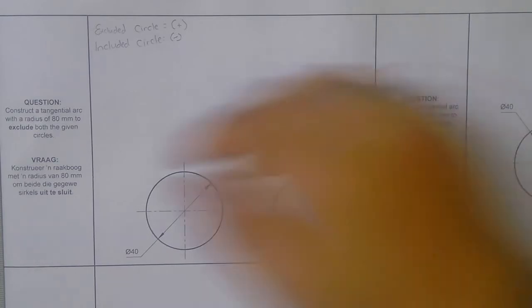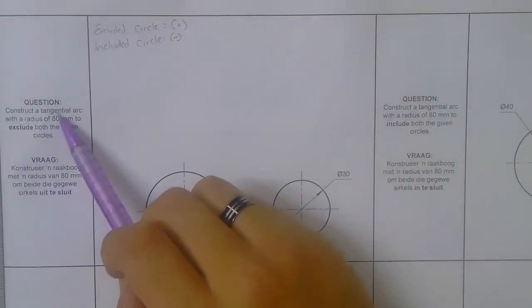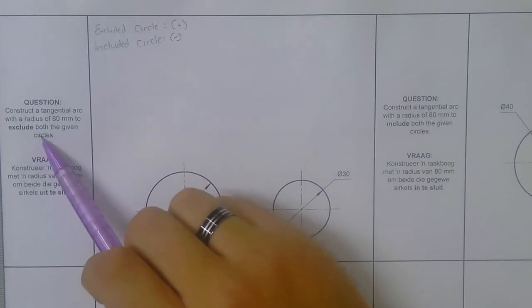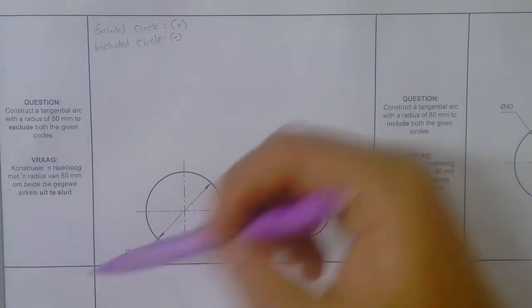So your question here says construct a tangential arc with a radius of 80 millimeters to exclude both the given circles.